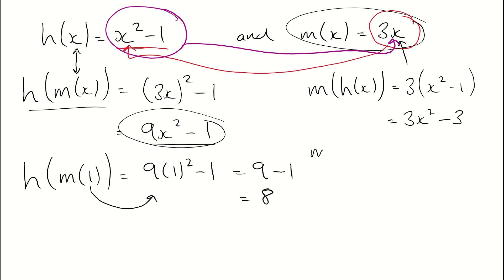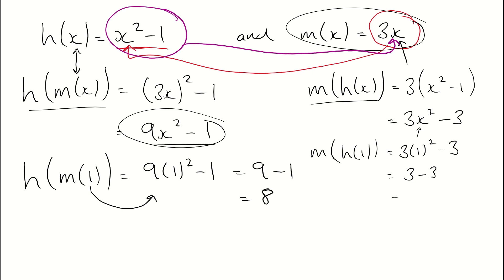When I evaluate m of h of 1, I pop a 1 in everywhere I see an x in m of h of x. So 3 lots of 1 squared minus 3, which is just 3 minus 3, so I get 0 in this case. And that's composite functions.